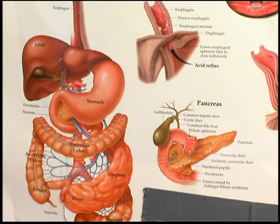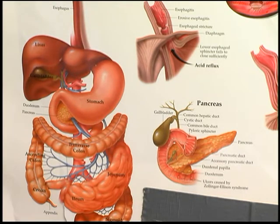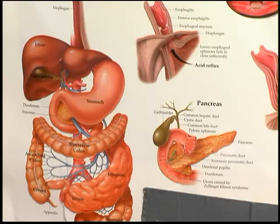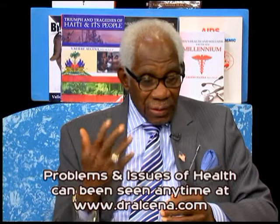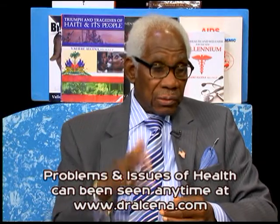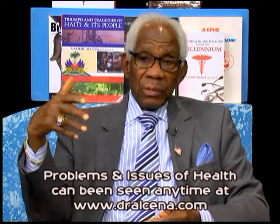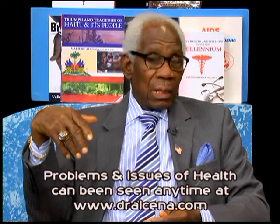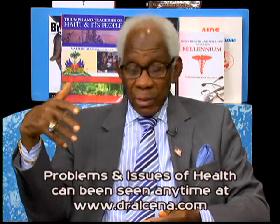The pancreas is now sick — not acutely, but chronically. Once that happens, you really cannot replace the pancreatic tissue. It's chronically destroyed because of whatever is causing it to be sick in the first place. You start with inflammation, the inflammation becomes chronic, and then you have chronic pancreatitis.